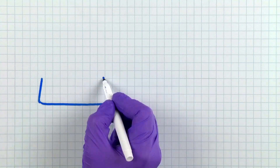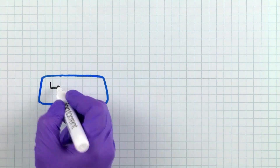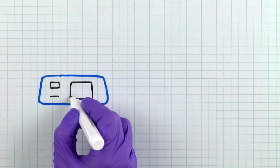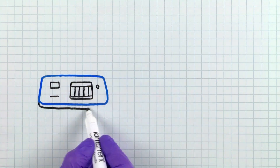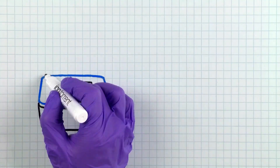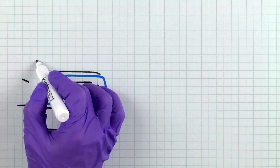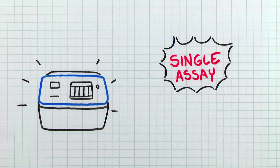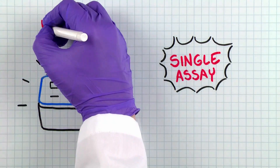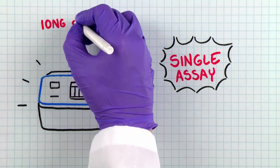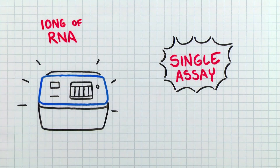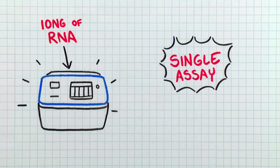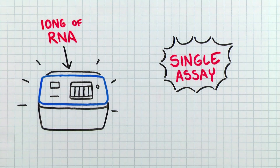That means that something like the Ion Amplicy Transcriptome Human Gene Expression Kit can be used to measure the expression level of over 20,000 RefSeq genes in a single assay, and using only as little as 10 nanograms of total RNA. Quite remarkable.